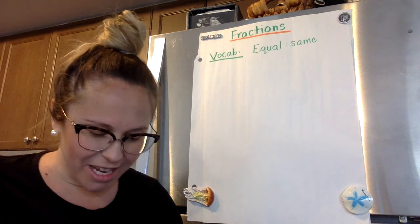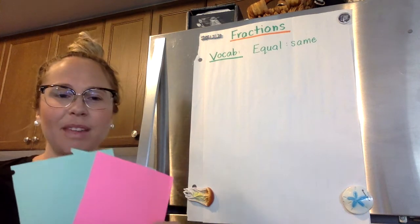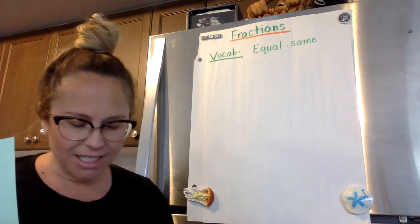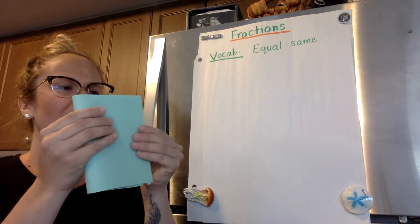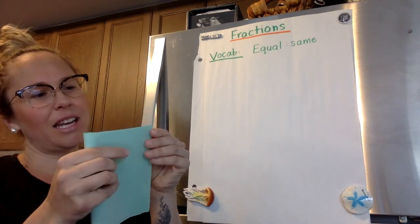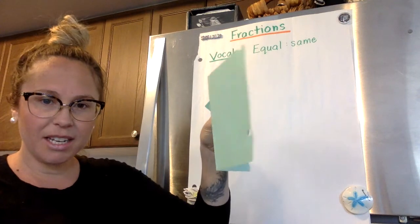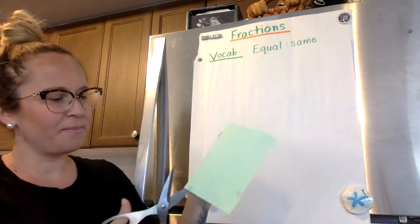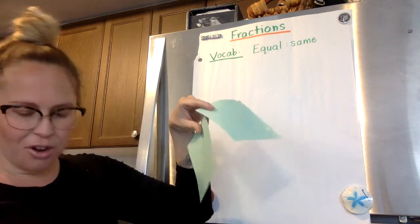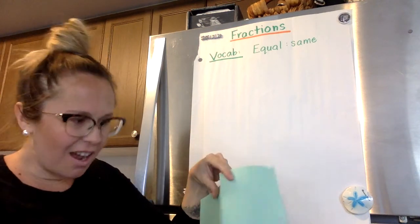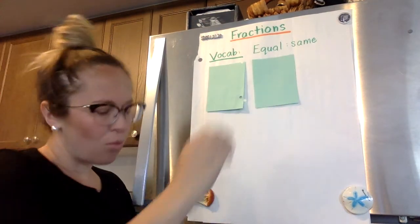Today we're going to start with three pieces of paper that are all the same size. What I want to start with is when I take a piece of paper like this, fold it like this, and then cut it on the fold line. This paper started out as one whole, and I can now label these as what we call halves.